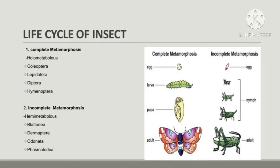Both complete and incomplete metamorphosis extend from the egg stage to the adult stage. Complete metamorphosis consists of four stages: first is egg, second is larva, third is pupa, and fourth is adult.